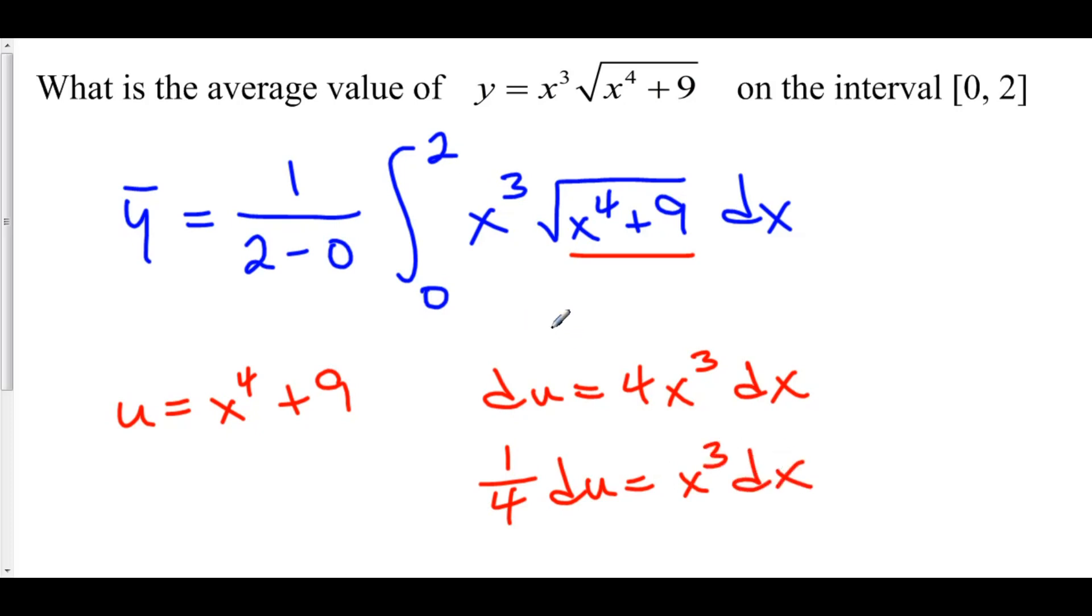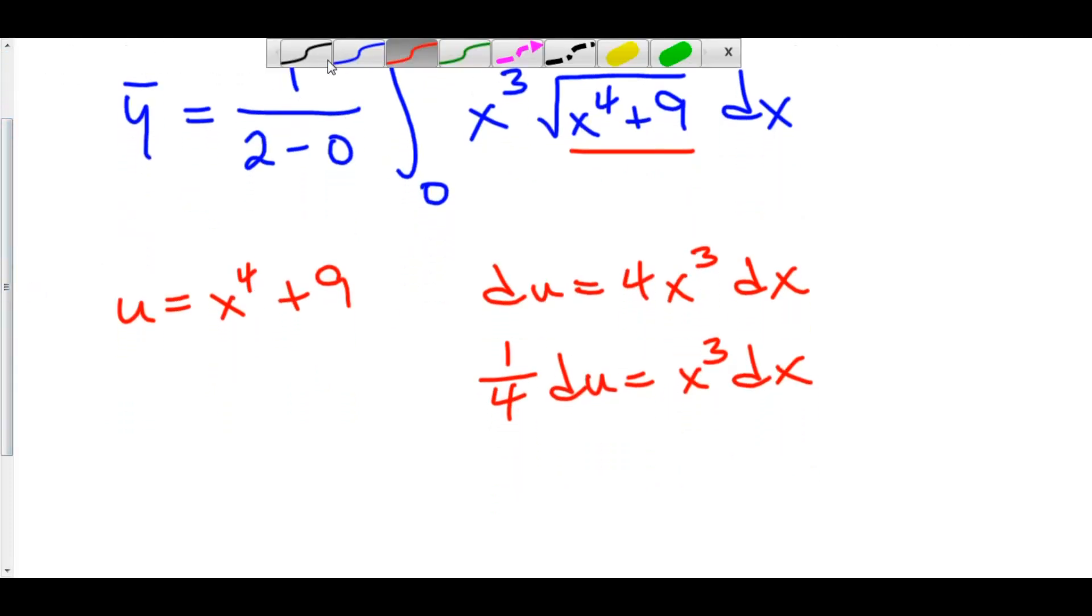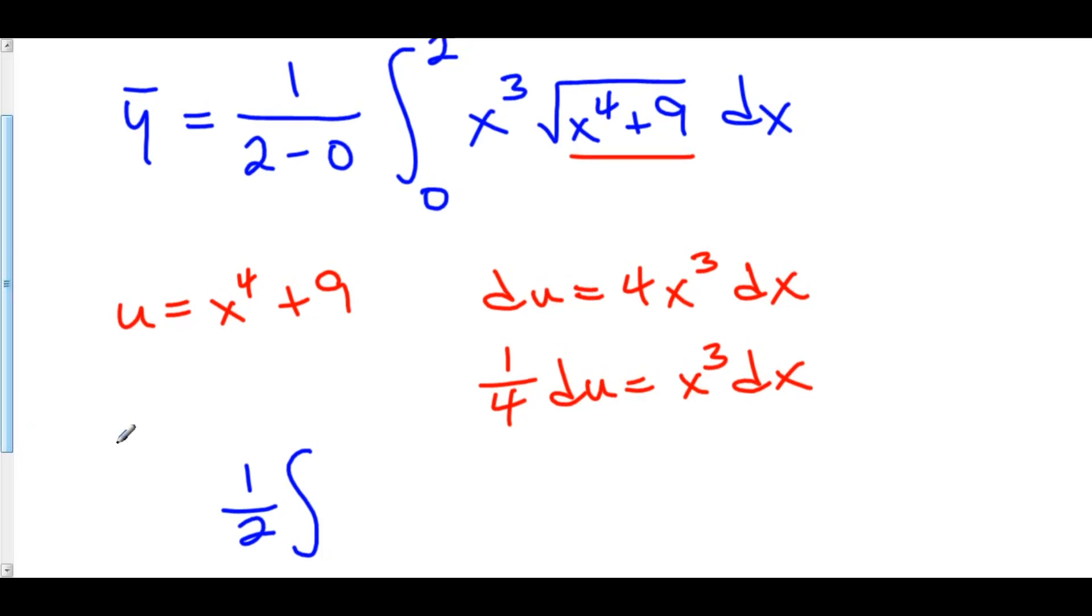This makes everything so much nicer. 1 over 2 minus 0, that's 1 half, times the integral. And I'm not going to put in my limits of integration quite yet because I will be changing those. I've got the 1 fourth du, which I'll put in the end. I have the square root of u, so I'll put that in. I've got the square root of u times the 1 fourth du for my x cubed dx. So here I've got my 1 fourth du.